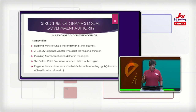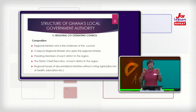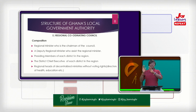The district chief executive of each district in the region is also part of this composition. So the composition of the Regional Coordinating Council includes: the regional minister who chairs the council; a deputy regional minister who would assist the regional minister; presiding members of every district in the region; the district chief executive of every district in the region; and regional heads of decentralized ministries — such as directors of health and education — without voting rights.